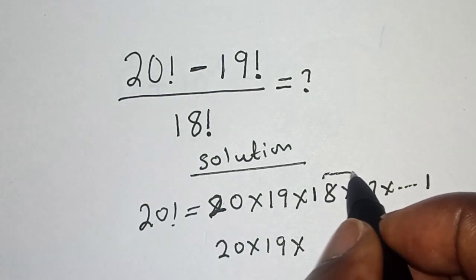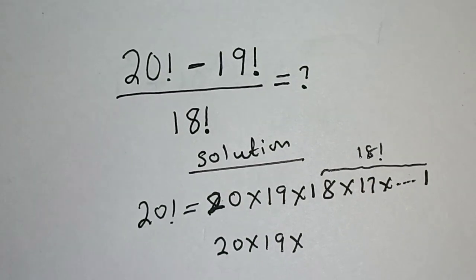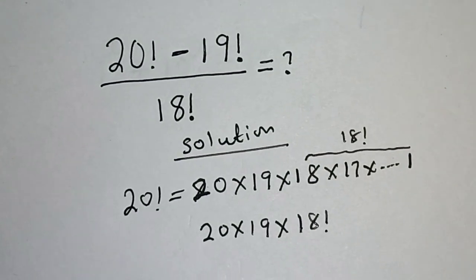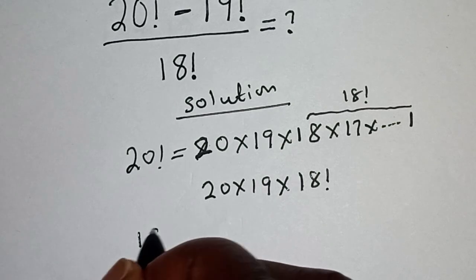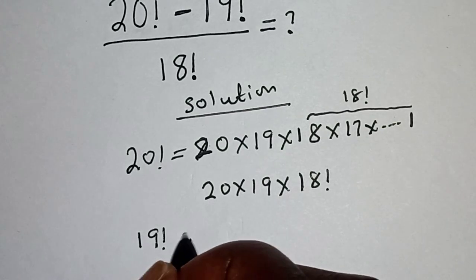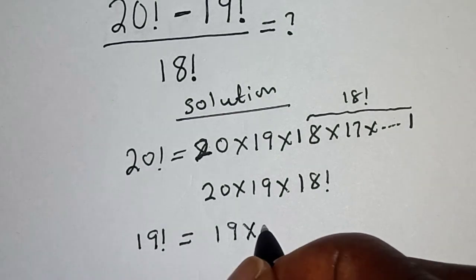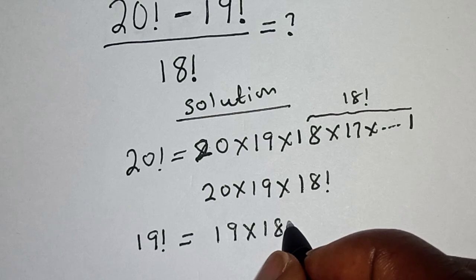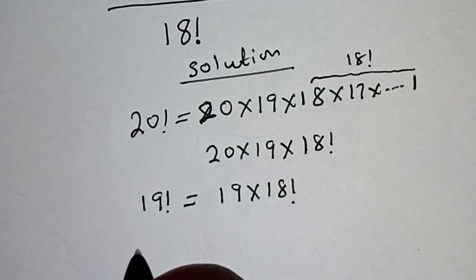18 factorial. So we have 19 factorial is equal to 19 multiplied by 18 factorial. Then let's substitute back.